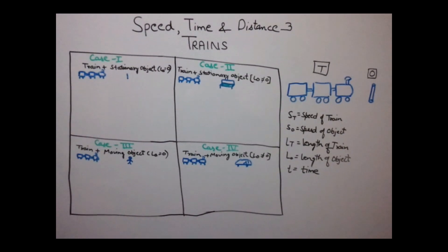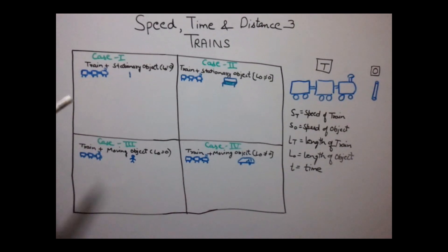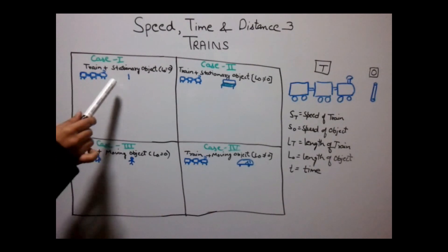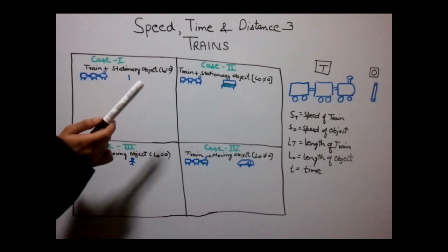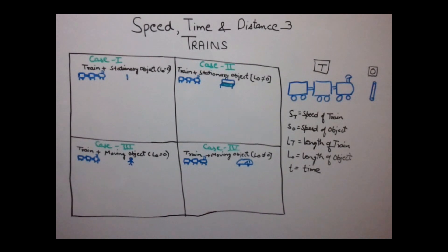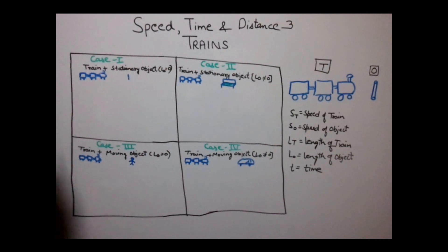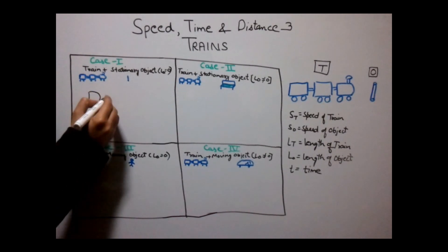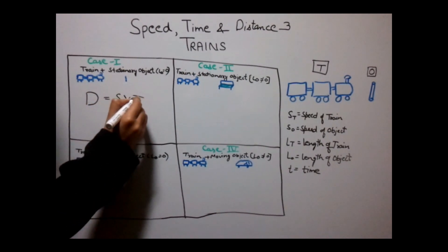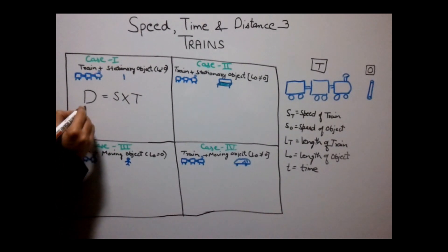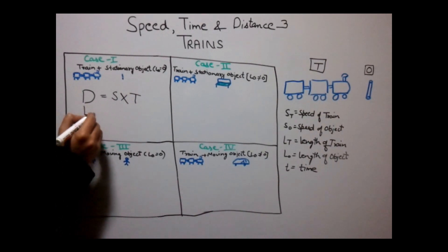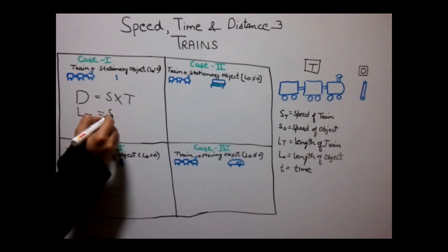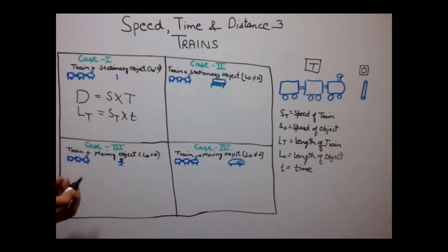There can be four cases in problems related to trains. The first case is when a train is moving and passing a stationary object where the length of that object is zero. The formula for this will be: LT equals ST into T, meaning the distance covered equals the length of the train, which equals the speed of the train multiplied by time.